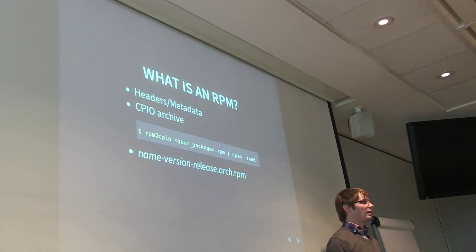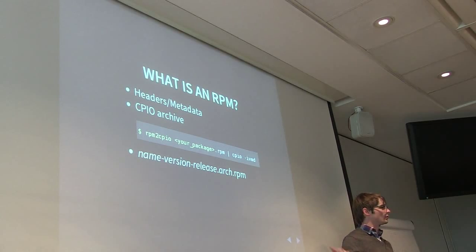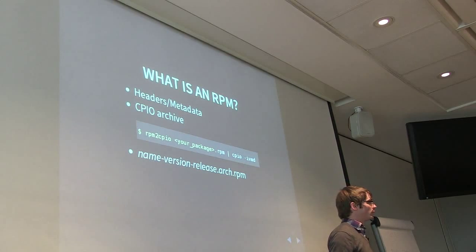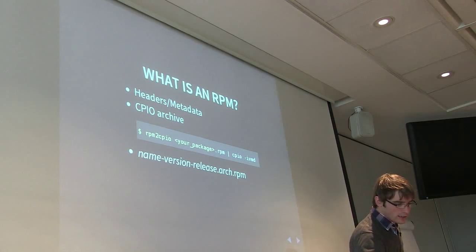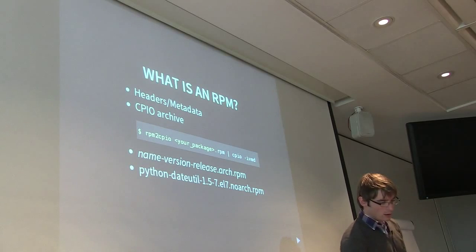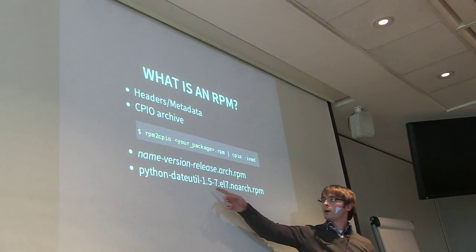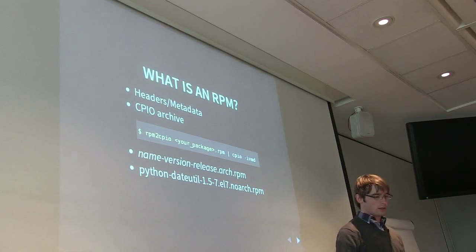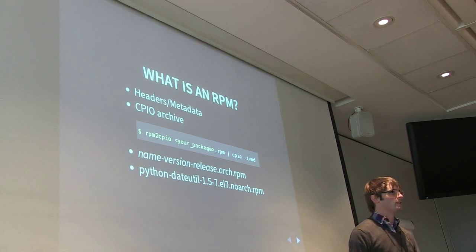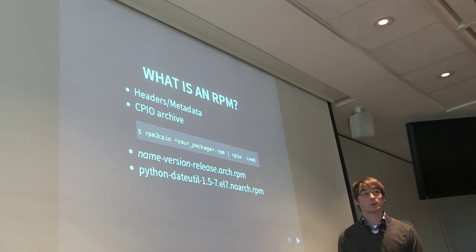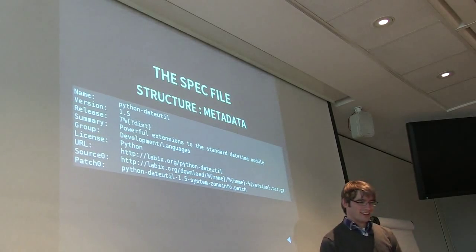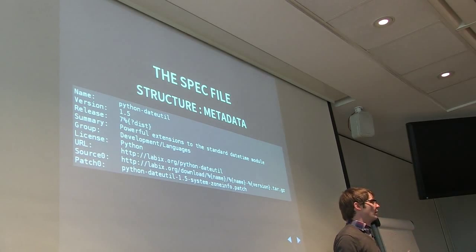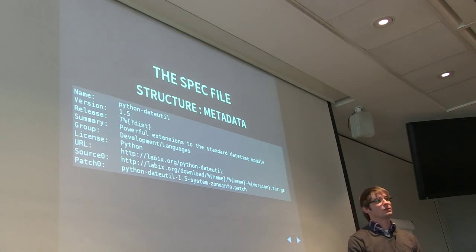We talked a little bit about that earlier when Thomas was talking about NVRs and Koji and all that stuff, so this is sort of the identifying information about the package you're going to be installing on your machine. We're going to take a look at one that's installed in CentOS 7 - Python dateutil 1.5, that's the version. It's the seventh build, basically - a no-arch package, so I picked something simple and easy. The spec file is out in my git repo but it's also on git.centos.org under the RPMs project.